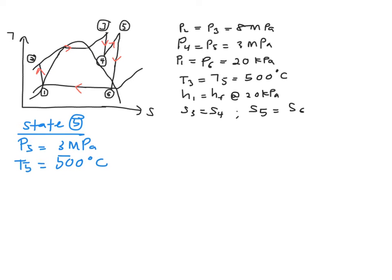When you are given pressure and temperature together, you are going to read from your table A6. So you will have your H5 is equal to 3457.2 kJ per kg. And don't forget that you will need your S5 because of the isentropic relation S5 is equal to S6. So your S5 is 7.2359 kJ per kg·K.